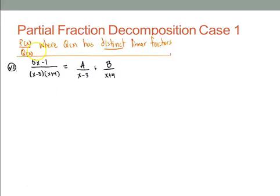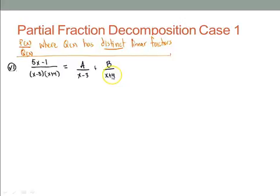First, before we get rid of the fractions, we need to set up our partial fraction decomposition. I take each term of the denominator and express it as a fraction. Because they are linear, I only have variables A and B. Those fractions — their sum — will be over each of the factors of the denominator. The denominator is the key to everything in partial fraction decomposition, which is why we must make sure it is factored.